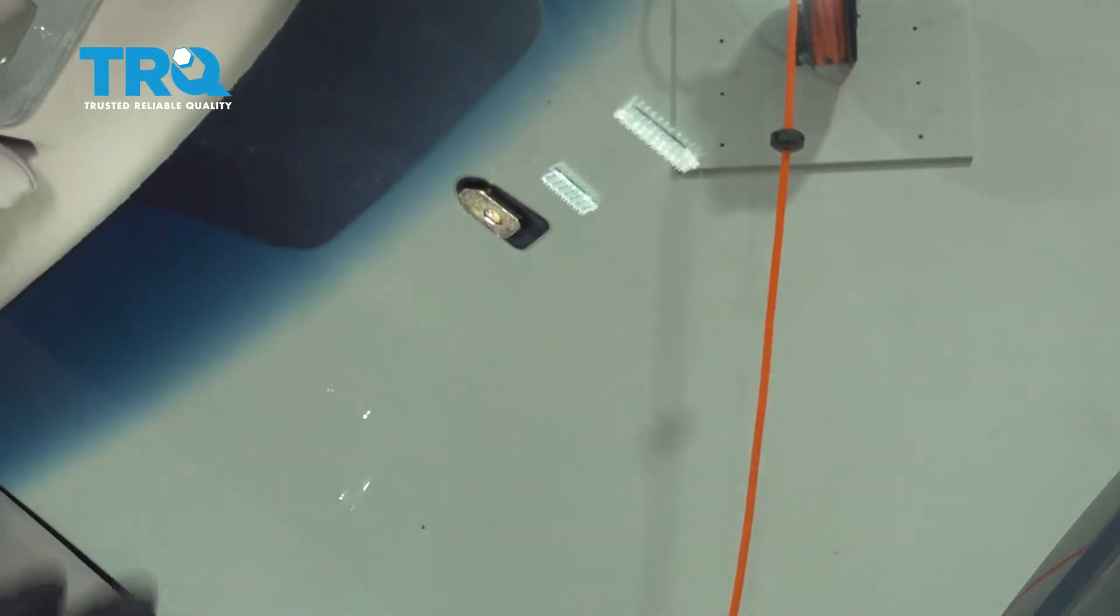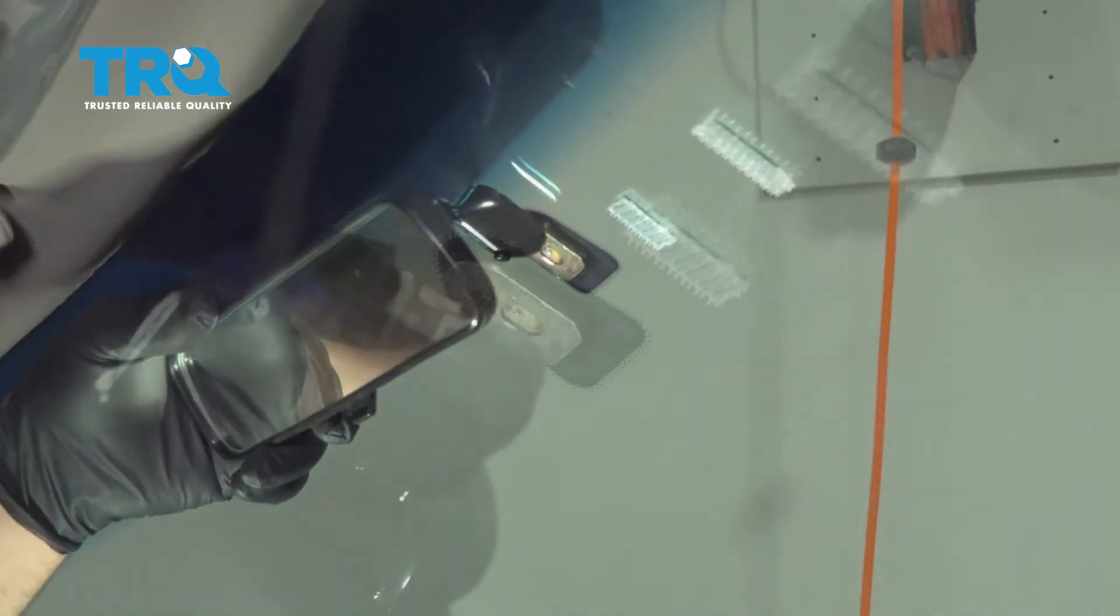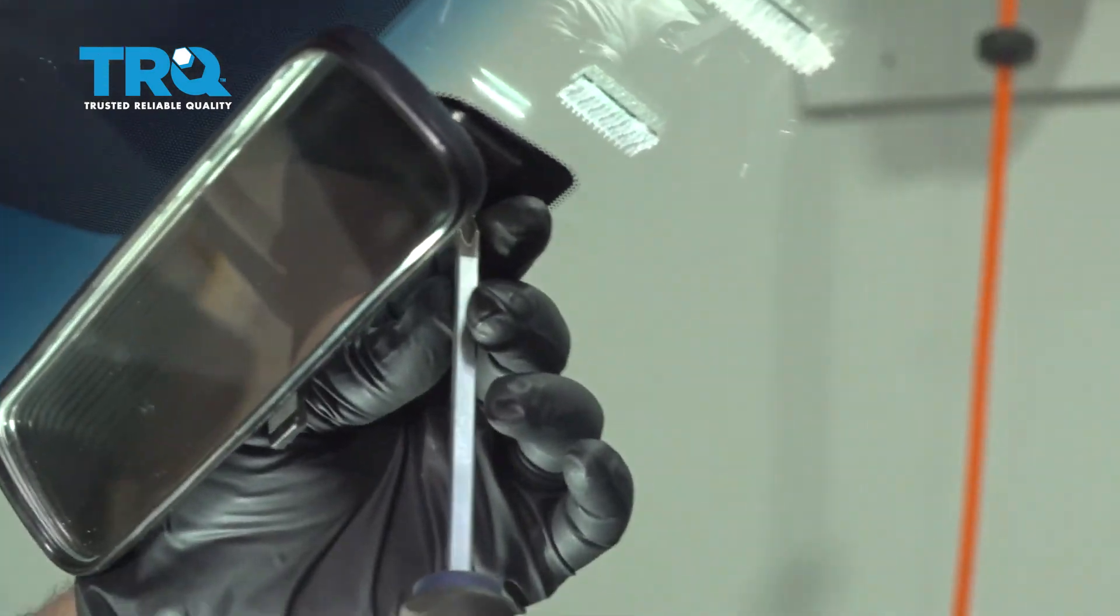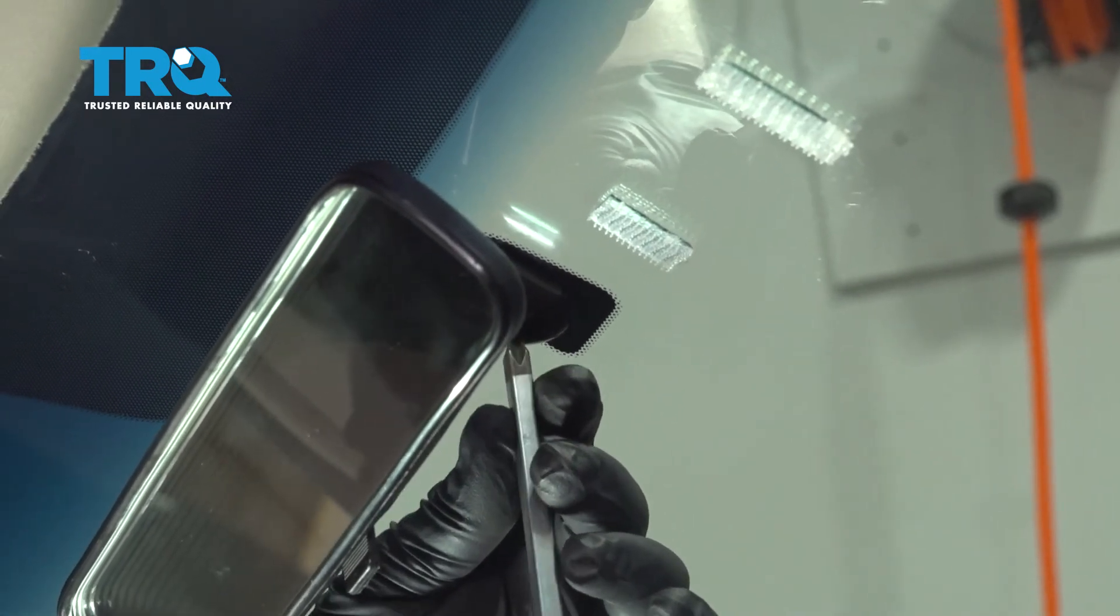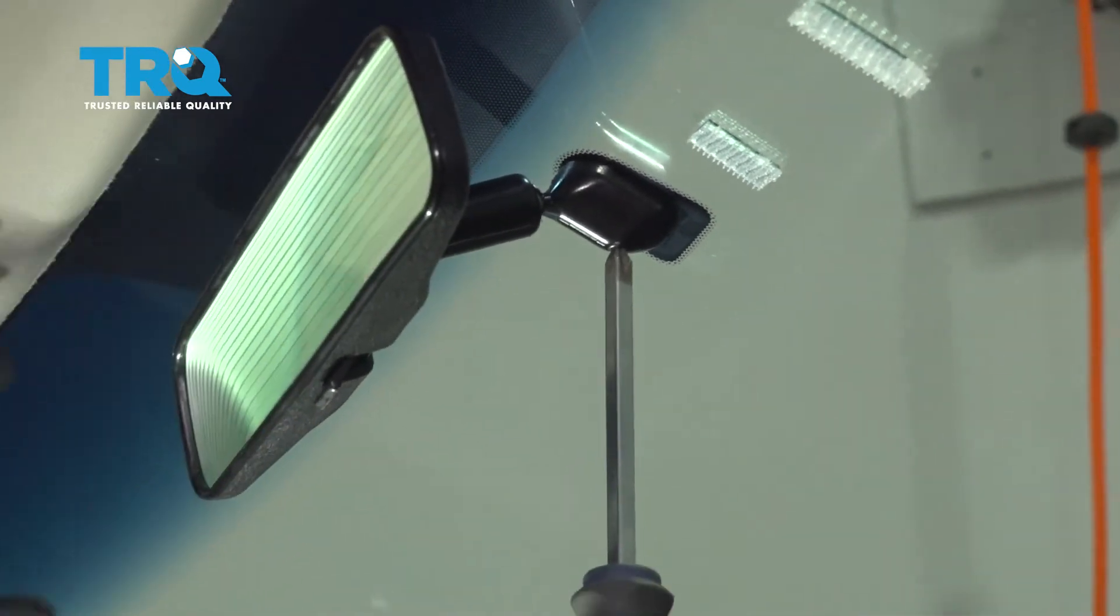Once you've let your base set for about 30 minutes to cure up, go ahead and set your mirror up on there. Tighten up your Phillips head set screw and you can adjust your mirror to its final position.